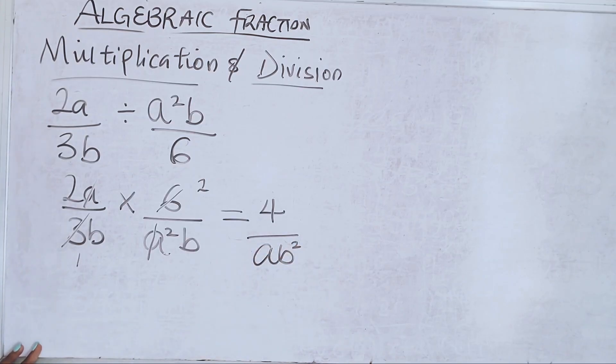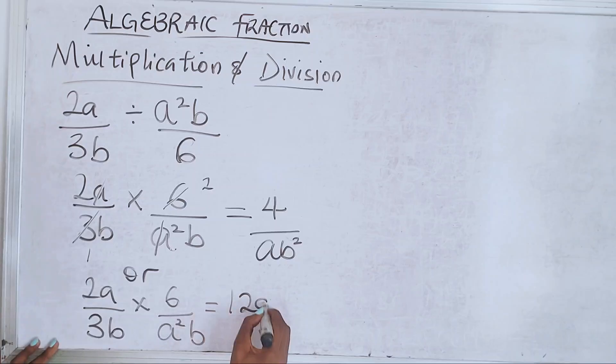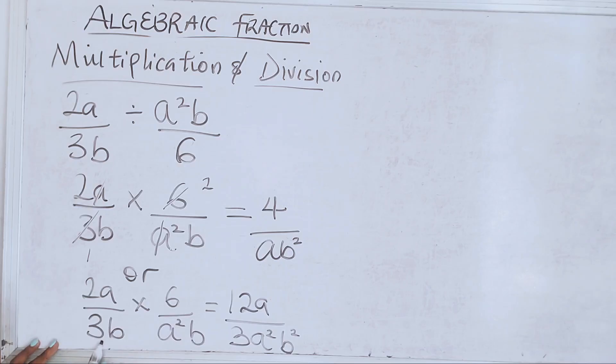Somebody else can solve it like this: multiply the whole thing first before they divide, so they are not confused. So 2a times 6 is 12a. 3b times a²b is 3a²b². Always write your numbers first followed by your letters - b times b is b².